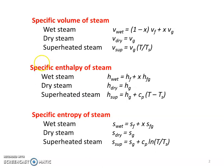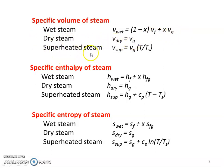The specific volume of the steam: for wet steam, V_wet equals (1 minus X) into V_F plus X into V_G. For dry steam, V_dry equals V_G. For superheated steam, V_super equals V_G into T divided by T_S, where T is the temperature of the superheated steam and T_S is the saturation temperature.